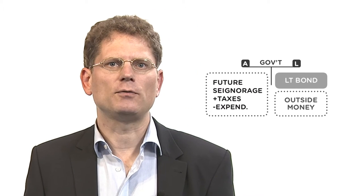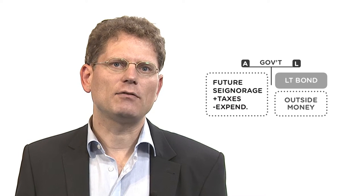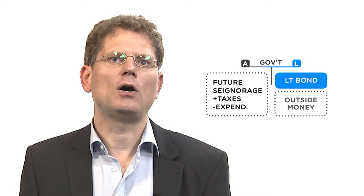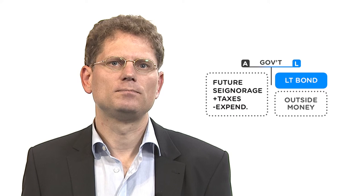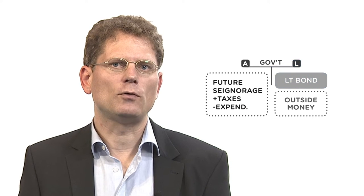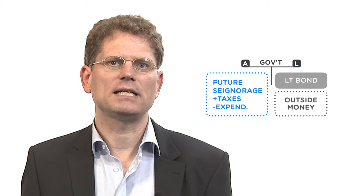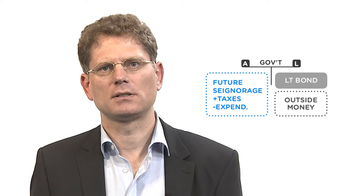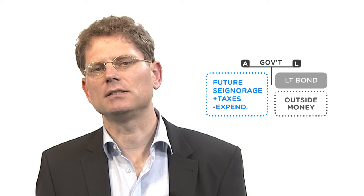Let us introduce the fear that government bonds might default. Looking at the balance sheet of the government, the government's long-term bonds are on the liability side, and the present value of all future taxes minus expenditures counterbalances these liabilities. With a negative shock, government tax revenues go down. If government expenditures don't follow and also decline, investors might be unsure whether the government is able to honor its debt obligations.